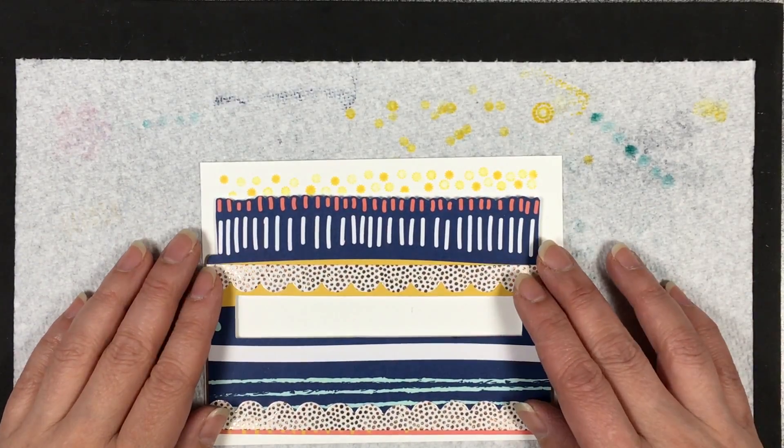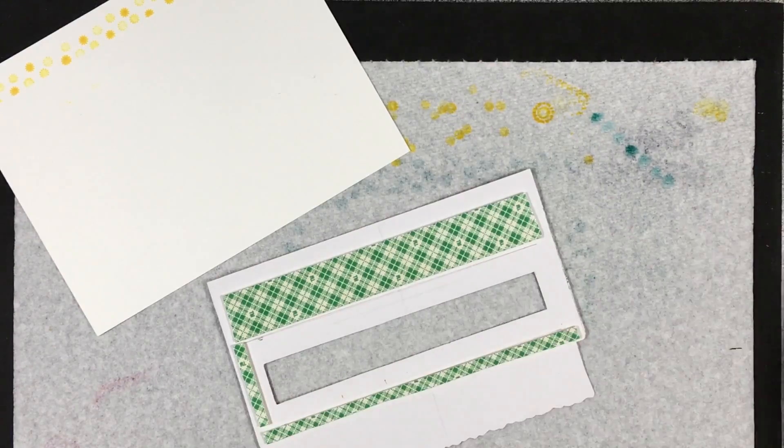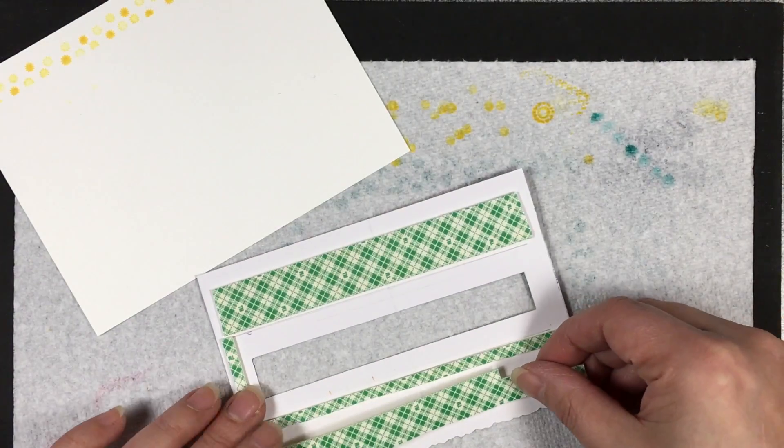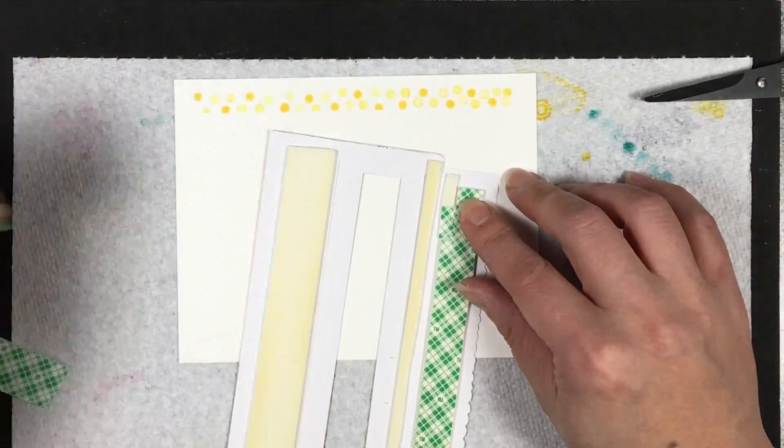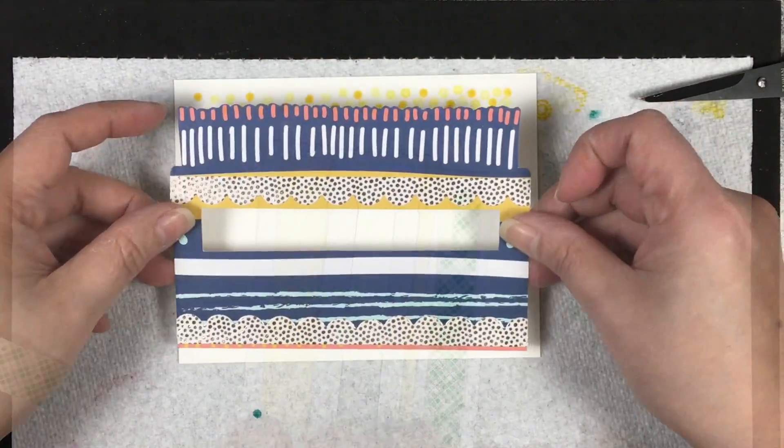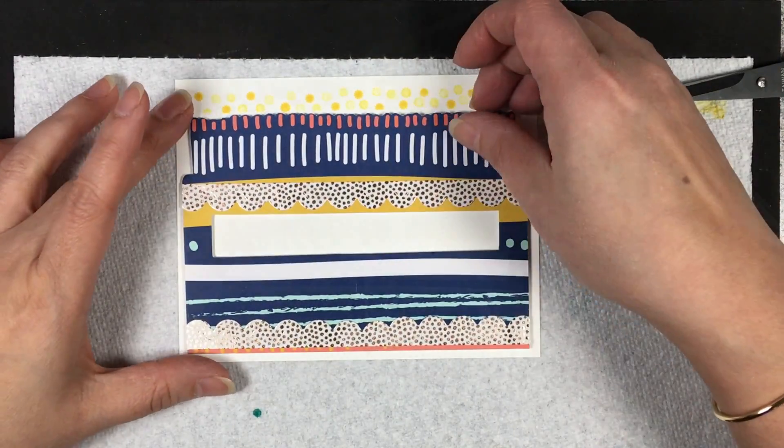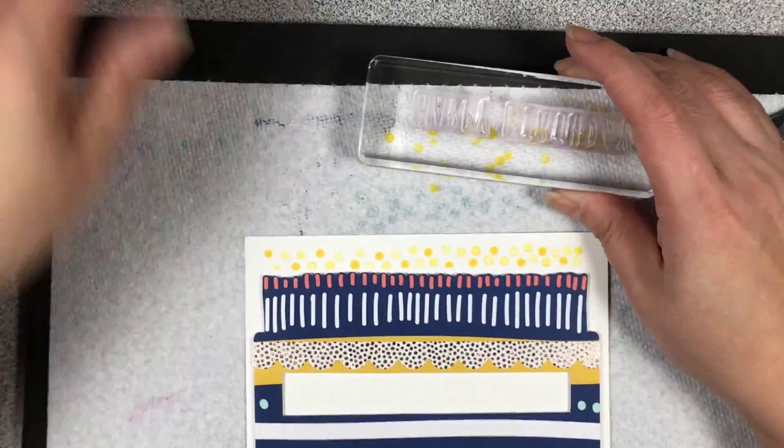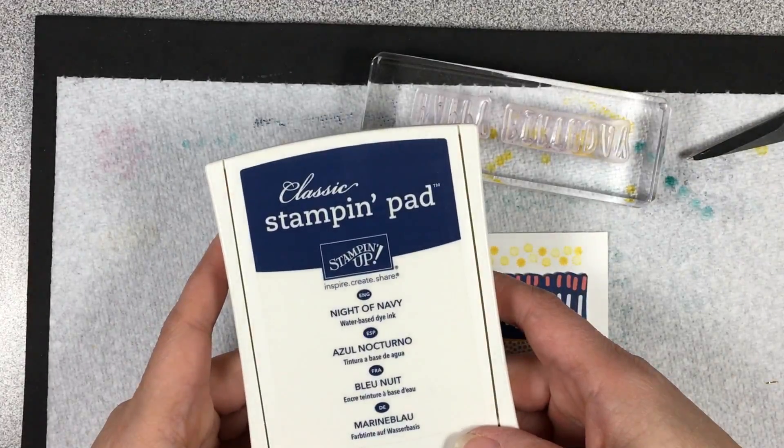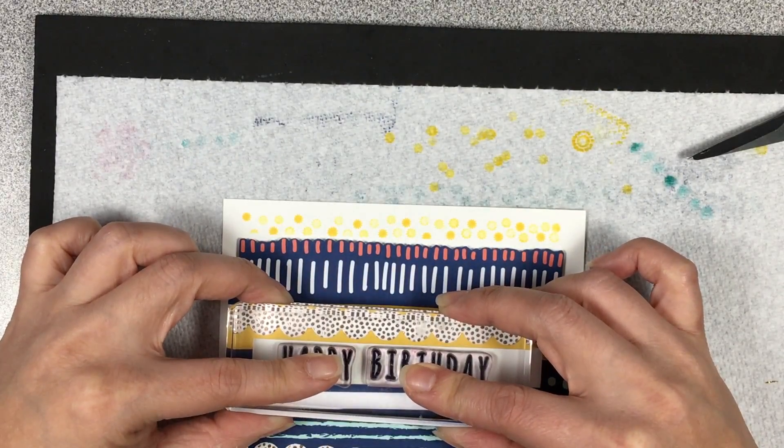Before stamping the Happy Birthday sentiment, we're going to adhere the cake onto the cardstock first. Just putting that last piece of foam tape on there. Just to let you know, I did stamp it earlier without sticking it down and it came out crooked. I had to redo that panel, so I thought I'd better stick it on first before I stamp the Happy Birthday sentiment.